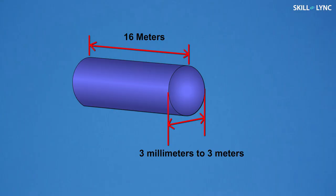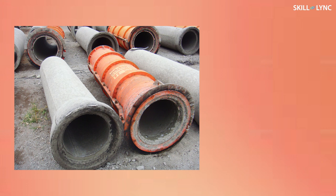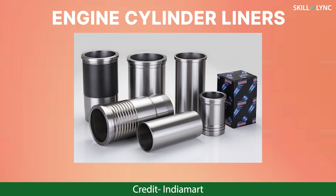Cylindrical parts with 3 mm to 3 meters diameter and 16 meters long can be manufactured using centrifugal casting. Using this casting process, hollow cylindrical parts such as pipes, gun barrels, bushings, engine cylinder liners, bearing rings, and lamp posts are manufactured.